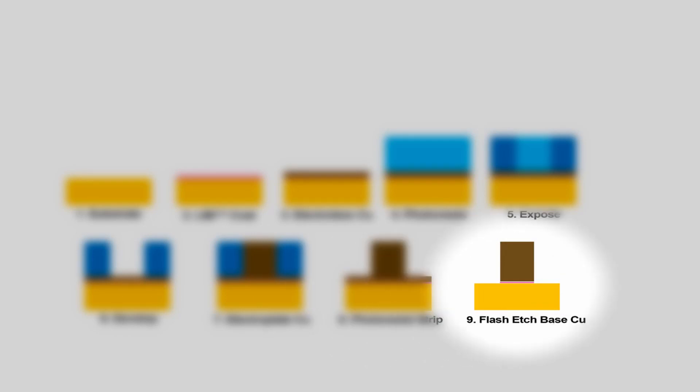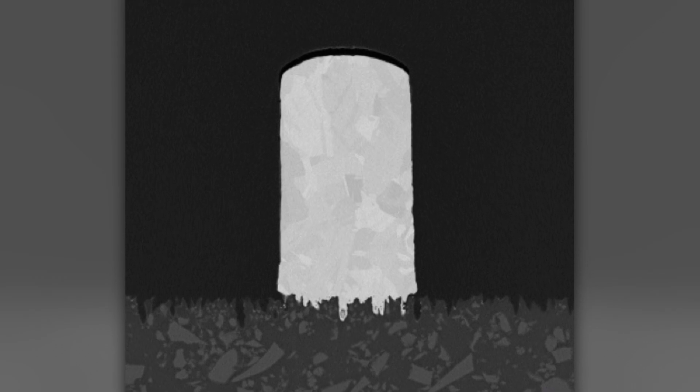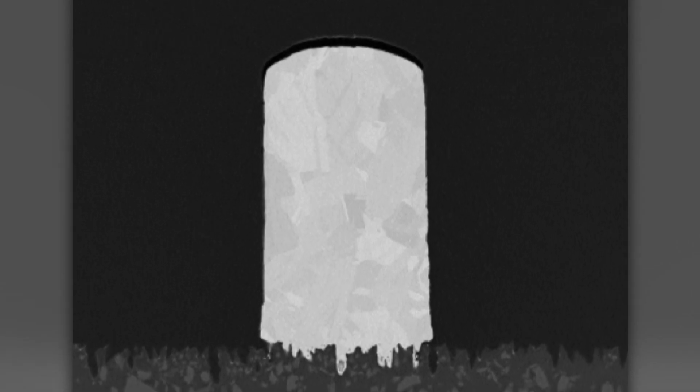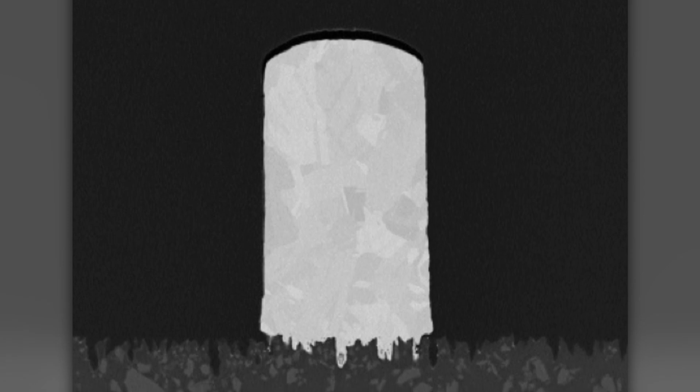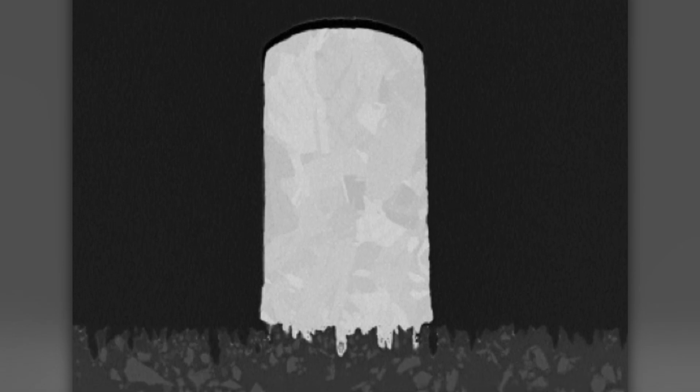The next step here would be to flash etch that remaining electrolysis copper from the panel. So once the flash etch has been completed, your circuit pattern will look something like this. You're going to have nice straight side walls. This process eliminates that trapezoidal effect of subtractive etch, and this is also a very tightly controlled process in general, so your line width and space is going to have much tighter tolerance than was available from the subtractive etch.